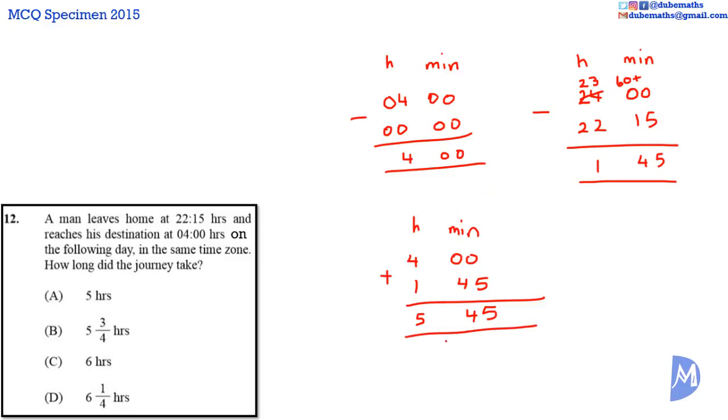Now, we have the answer in terms of hours and minutes. The question lists the answer in terms of hours only. So, we need to convert these minutes into hours. 45 minutes is equal to 45 divided by 60 hours because there are 60 minutes in 1 hour. 45 over 60 can be simplified to 3 over 4. So, the answer is 5 and 3 quarter hours. The answer is B.